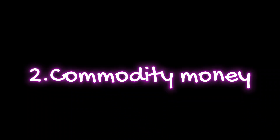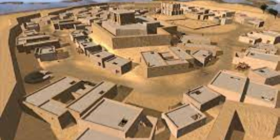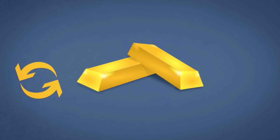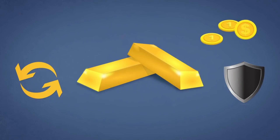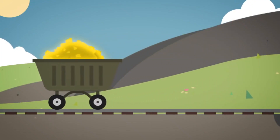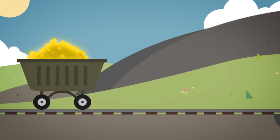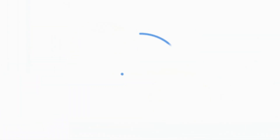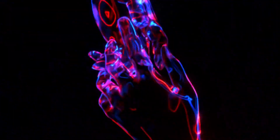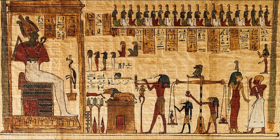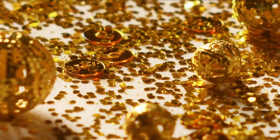Around 3000 BCE, a medium of exchange known as commodity money came into existence. This form of money was made up of items that held intrinsic value, such as silver, gold, and salt. Commodity money's scarcity and its high demand for use in trade and commerce gave it significant worth. Precious metals such as gold and silver were utilized as a medium of exchange due to their inherent value, ease of recognition, and transportability. Many ancient societies, including Mesopotamia and ancient Egypt, utilized commodity money.